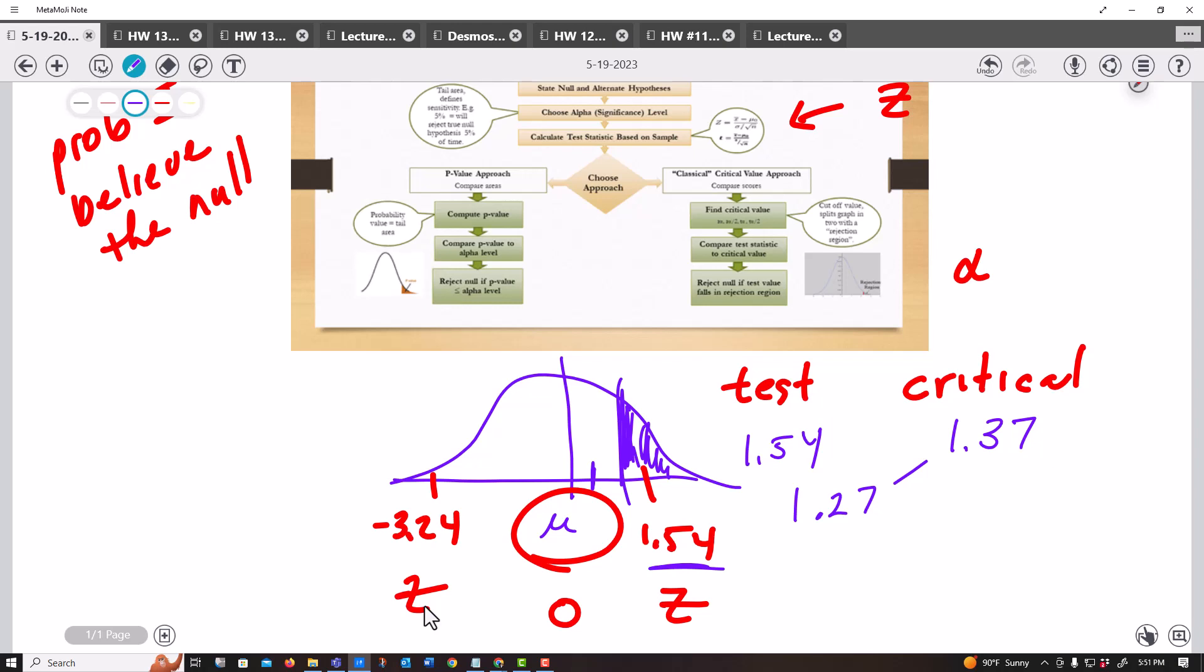But again, all these critical values versus test statistics, that's confusing to a lot of people. So they tend to like the p-value. However, the p-value, you still have to get your test statistic, like say in Excel. And from that is where you compute the p-value, the probability that I believe you.